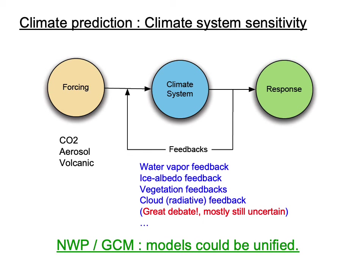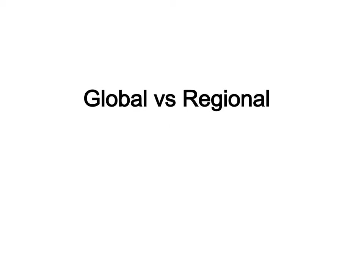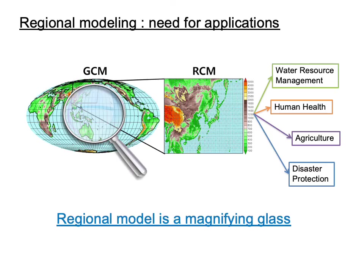It is a trend that NWP and GCM are being unified to share knowledge between the NWP and climate communities. Now, let's move to regional modeling. Regional modeling is like a magnifying glass, needed for applications to impact assessment such as water resources management, human health, agriculture, and disaster prediction.